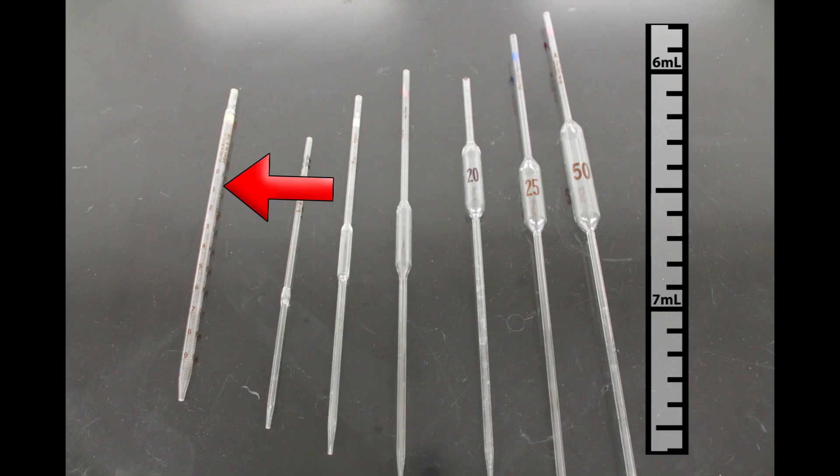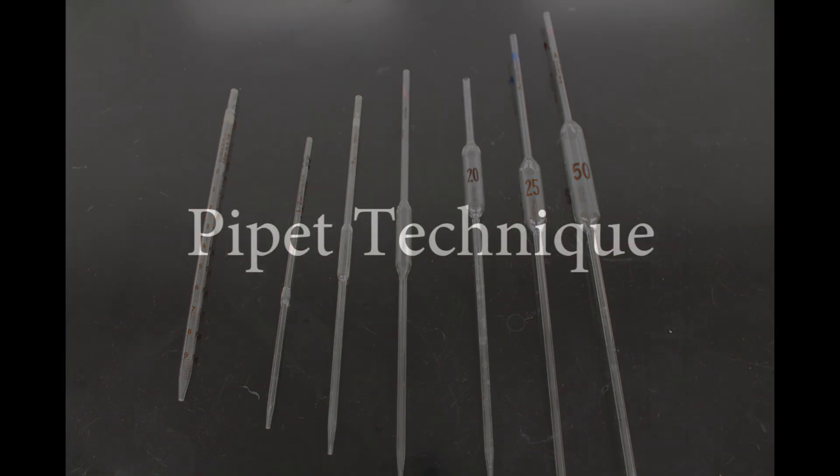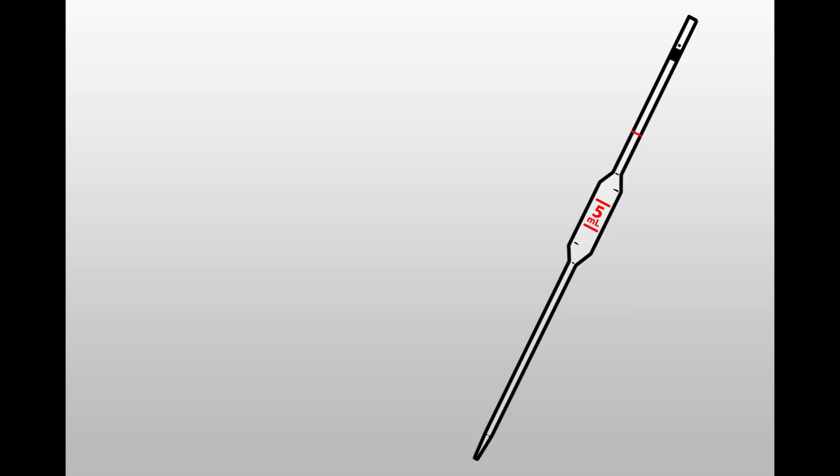This pipette is designed to allow you to deliver a variety of volumes by using the difference between initial and final volumes measured. In this video I am going to demonstrate with a 5mm transfer pipette that will precisely measure one specific volume. Notice that the transfer pipettes only have one graduation mark that is specific for one fixed volume.